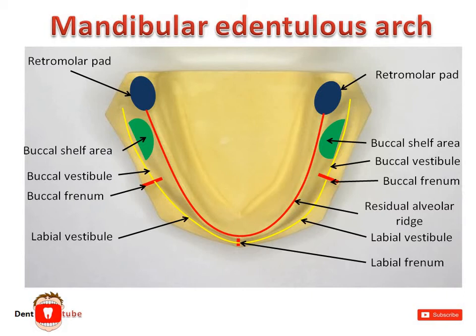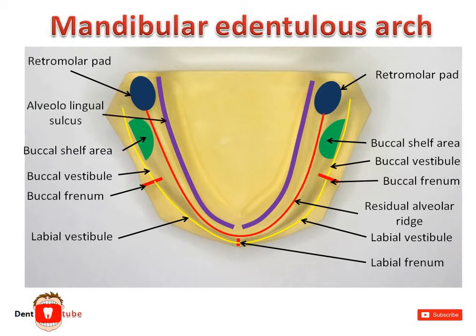The retromolar pad is bounded posteriorly by tendons of temporalis, laterally by the buccinator, and medially by the pterygomandibular raphe and superior constrictor. A sulcus or depression present between the alveolar ridge and tongue is the alveololingual sulcus. A pair of bony tubercles found entirely on the lingual side of the body of the mandible are the genial tubercles.